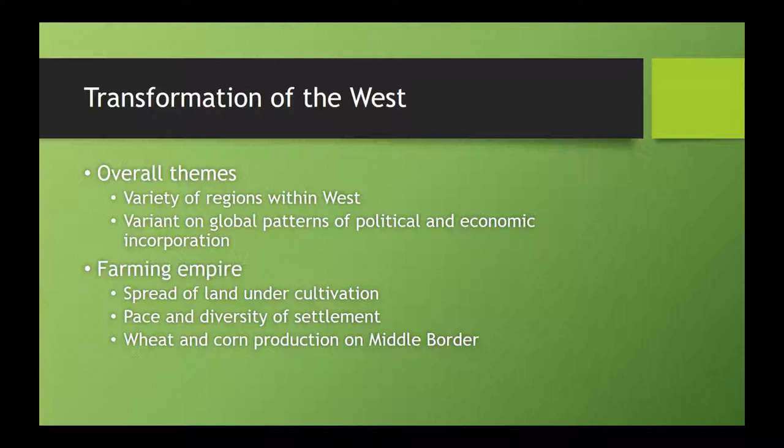When we talk about the West, there are lots of different regions within it. Michigan used to be called the West. The Dakotas and Kansas were called the West. Texas was the West. Eventually we get the Southwest, which is the parts we took from Mexico. There are a whole variety of patterns of politics, different ethnic groups, different types of communities and economic approaches. Really, while the rest of the Western world is getting colonies, we're building the United States Empire across the continent until we have from sea to shining sea.